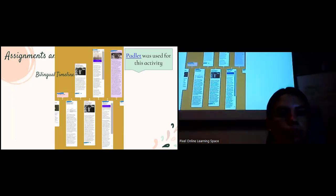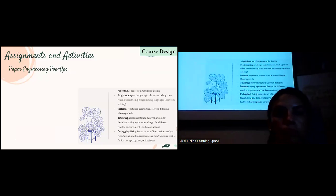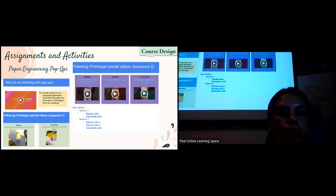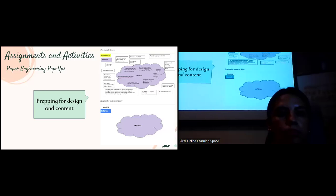The next activity was paper engineering pop-ups. We gave them computational literacy definitions at the beginning where we were talking about computational thinking. We created video modules for them. This was an online course, so we had to provide online versions and scaffolding. We created modules where students could go from beginner to more intermediate across the semester. The first pop-up was an introductory version, and then the next pop-up was a little bit more difficult.